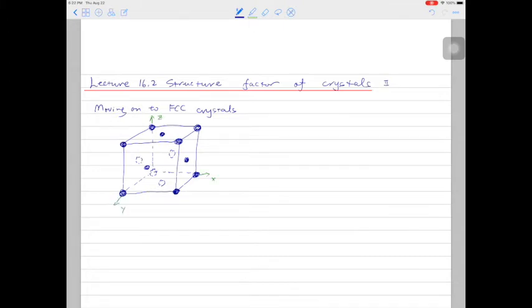To define any FCC crystal, all we need are four atoms. So that's (0, 0, 0), then (half, half, zero), (half, zero, half), and (zero, half, half).